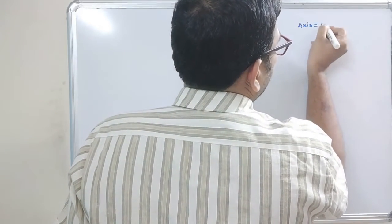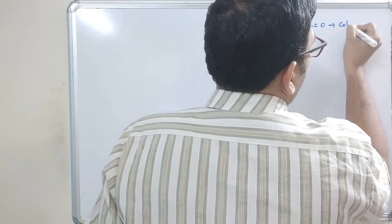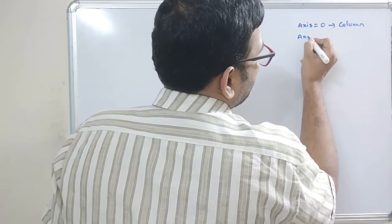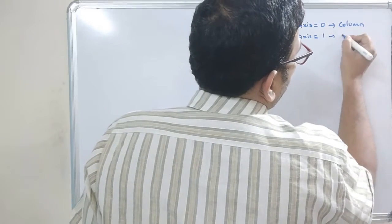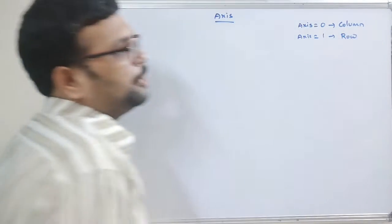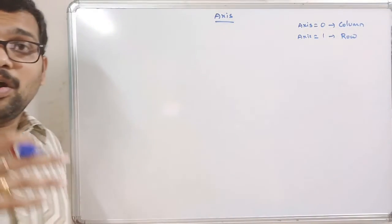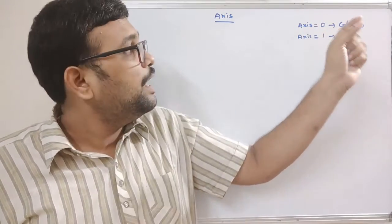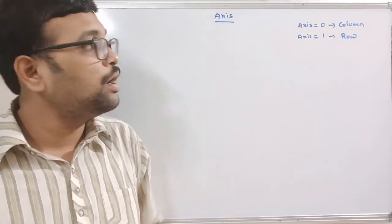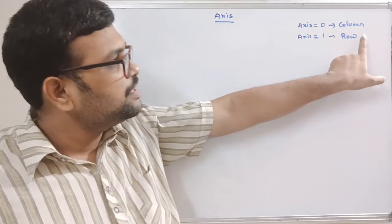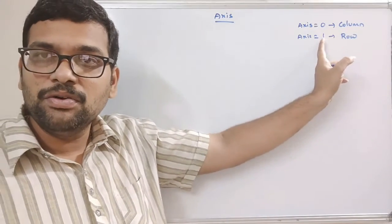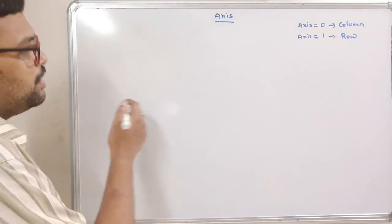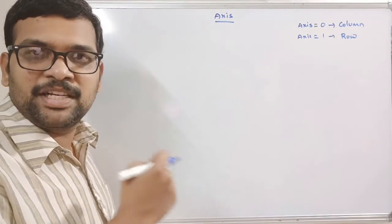Axis equal to zero means column-wise operations, and axis equal to one means row-wise operations. That means if axis is equal to zero, the operation is done column-wise; if axis is equal to one, the operation is done row-wise. Just remember that — it's as simple as that.